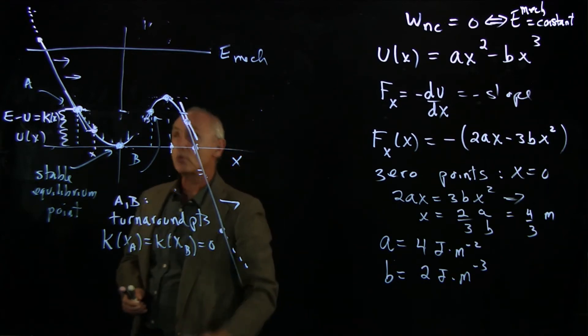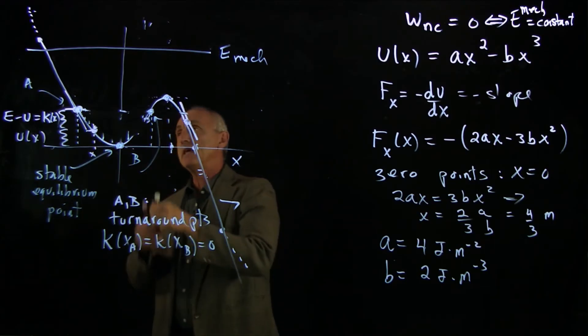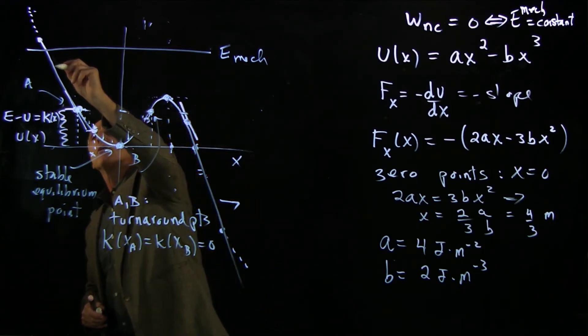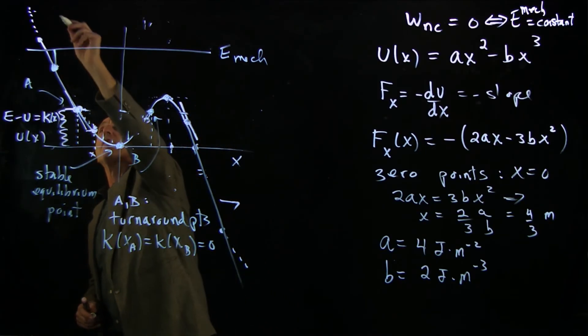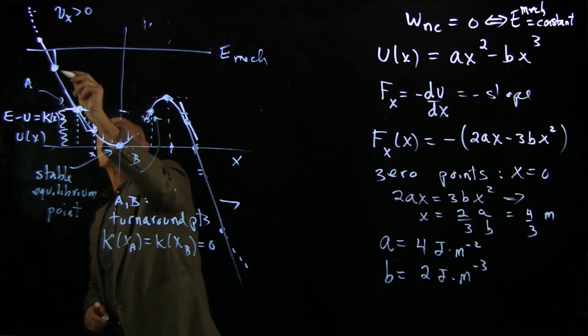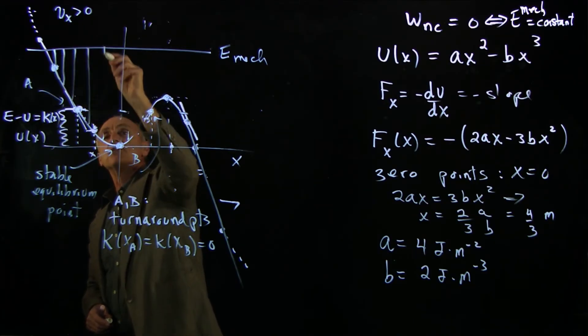And let's just follow qualitatively the motion of a particle that begins, say, over here with a little bit of kinetic energy and potential energy. And if the particle starts off with the velocity in the positive x direction, then it's going to move in this direction. And you can see the kinetic energy is increasing.